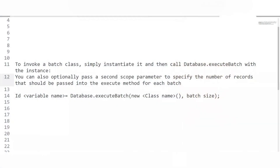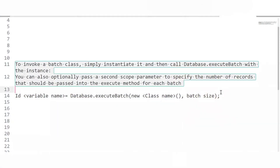What are the places from where we can call a future method or a batch Apex? For the future method, it can be called from a trigger, an Apex class, and a scheduler class. Let me know in the comments where batch Apex can be called from. To invoke a batch class, we call Database.executeBatch(), passing the instance of the batch class as the first parameter and an optional second parameter to define the batch size.